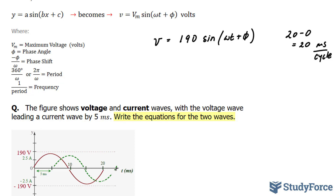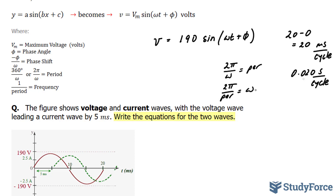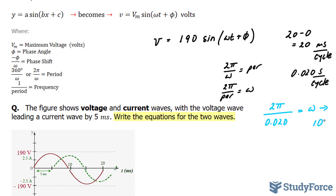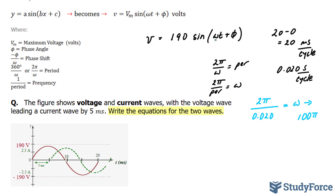Since the x-axis is in terms of milliseconds, we convert it to seconds by dividing by 1000, giving us 0.02 seconds per cycle. Using the formula where 2 pi over omega equals the period, solving for omega gives us 2 pi over period equals omega. Replacing 0.020 into the formula: 2 pi divided by 0.020 equals 100 pi. So omega is 100 pi, and we can replace omega with 100 pi t plus phi.